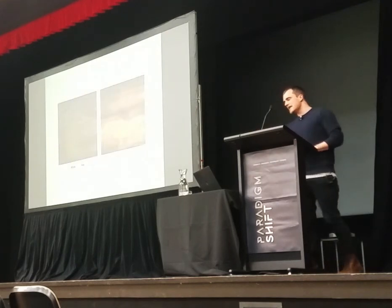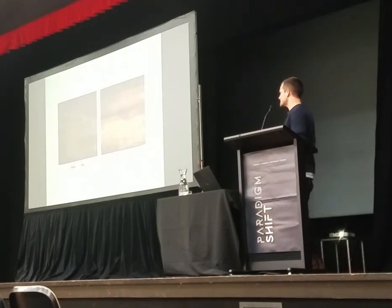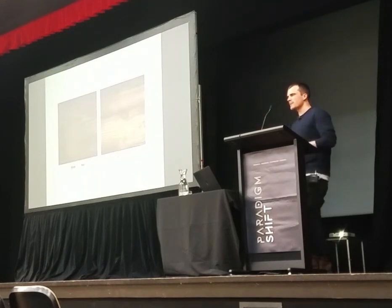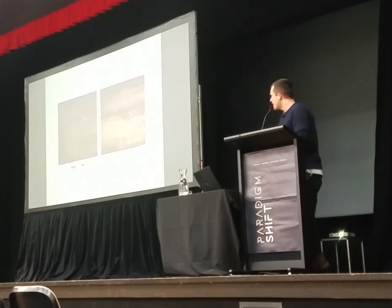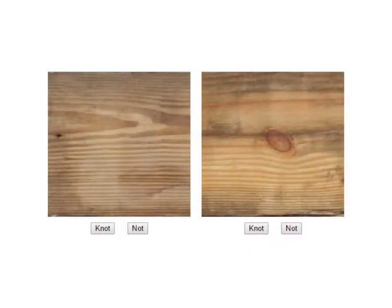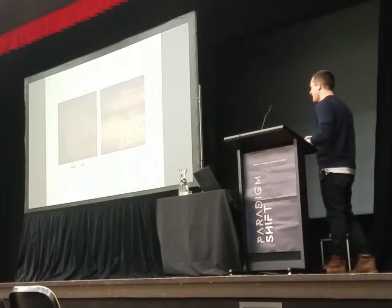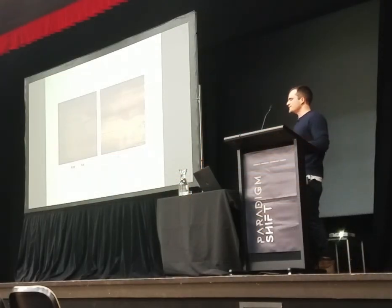To get this data, we created a crowdsourcing system — a web app where you log in and it gives you a picture of a piece of wood and asks you to click and tell the machine: do you think there is a knot in this picture or not? We distributed this among colleagues at different universities and quickly generated a huge database — a training set of images — to teach the machine to identify knots. On the left are images with knots, on the right without.